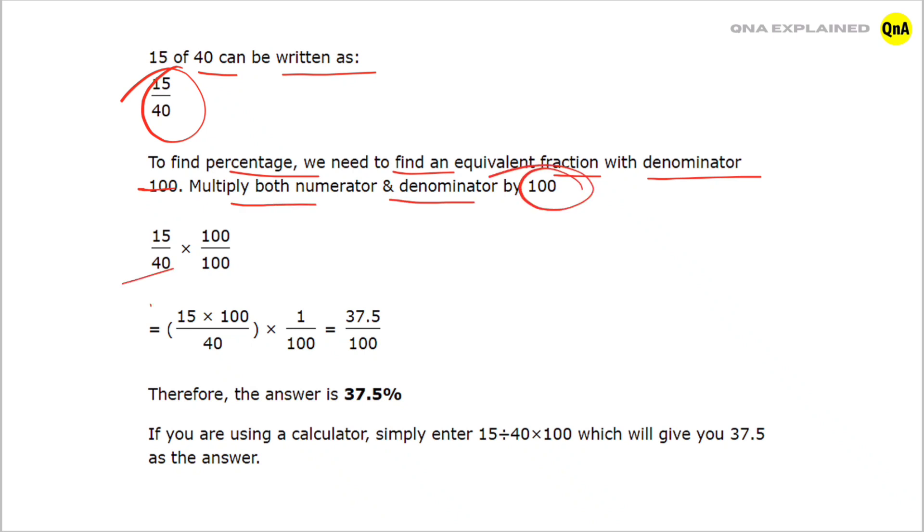15 upon 40 into 100 upon 100 is equal to 15 into 100 upon 40 into 1 upon 100. After solving, we get 37.5 upon 100.